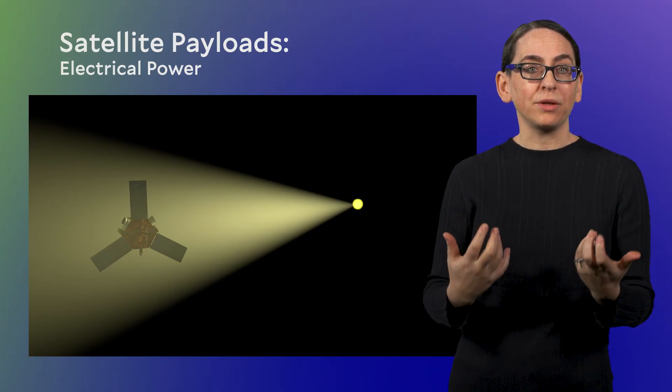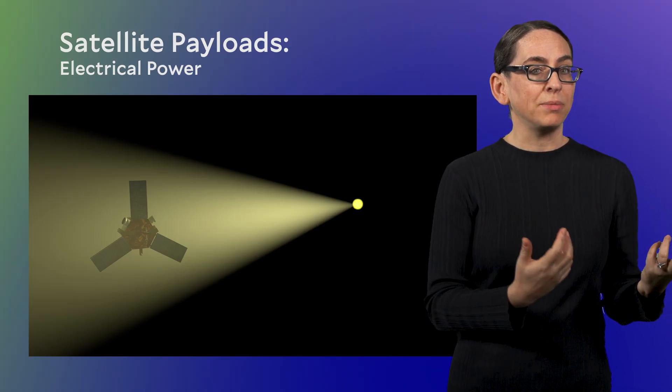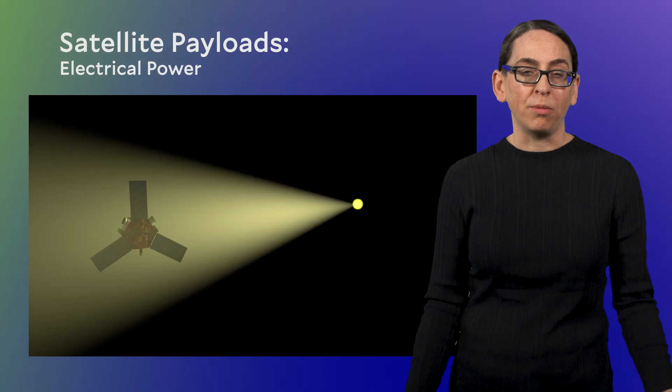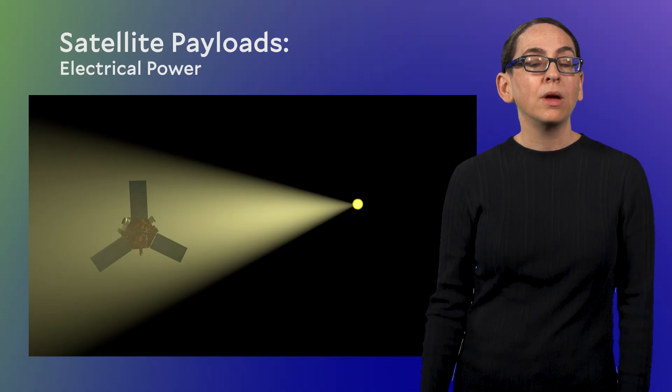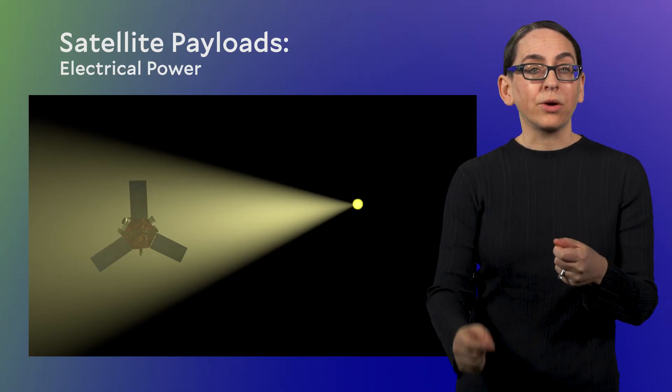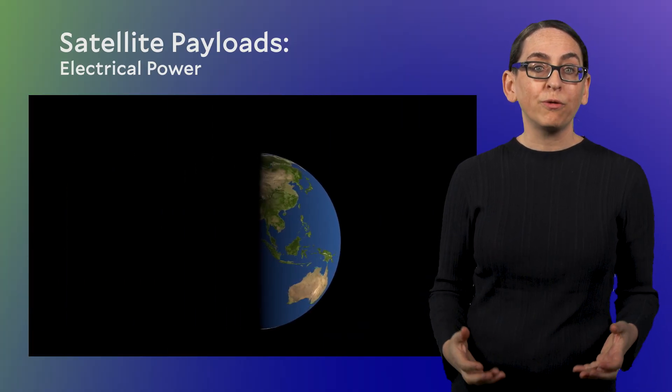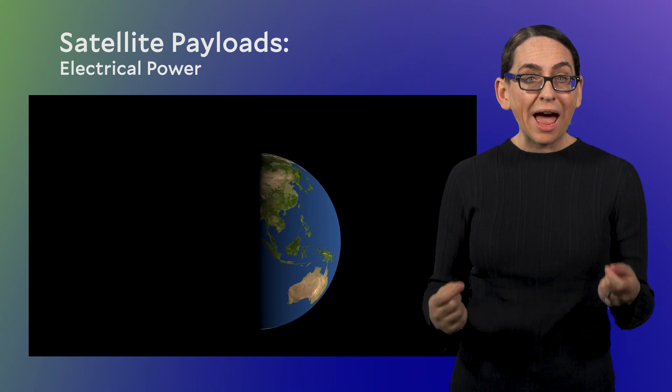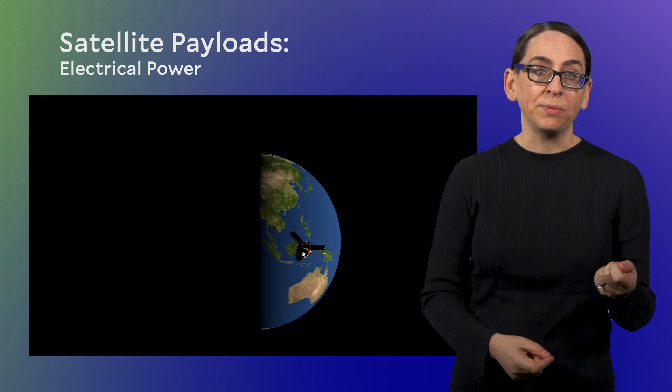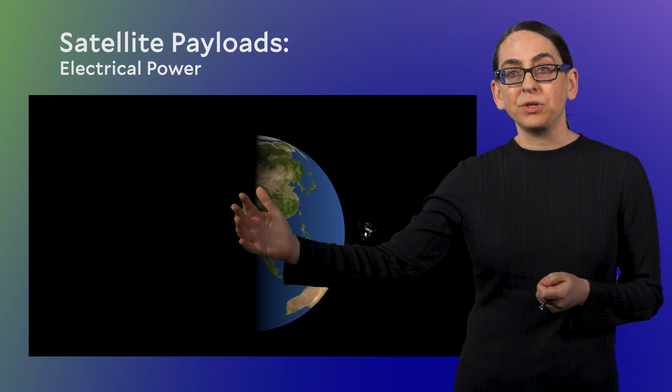Satellites can orient their solar panels towards the Sun, but there's actually a much larger problem for generating solar power. Earth orbiting satellites are often themselves in the Earth's shadow where the Sun is completely blocked. This is especially true for LEO satellites, which spend half their time in the Earth's shadow. But even satellites out at geostationary orbits will spend some time in the Earth's shadow.